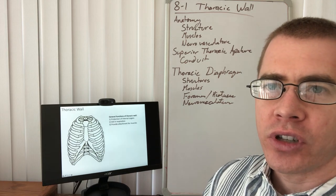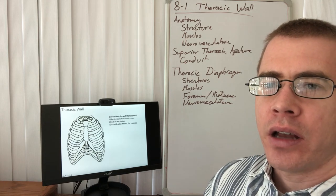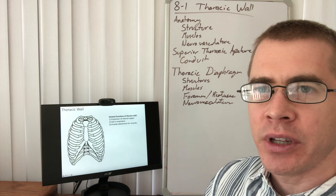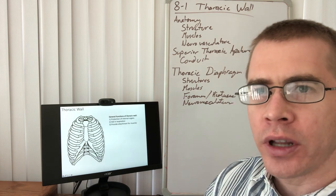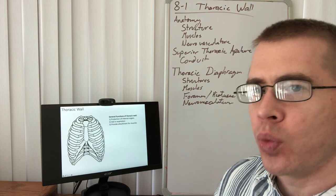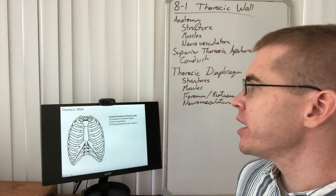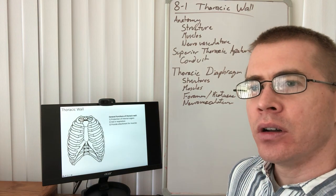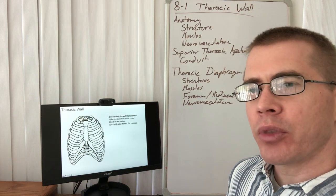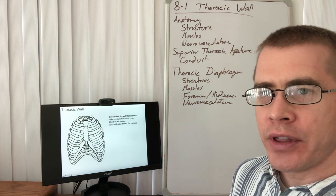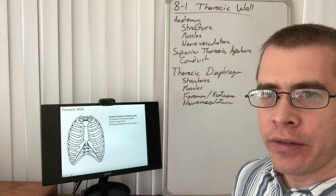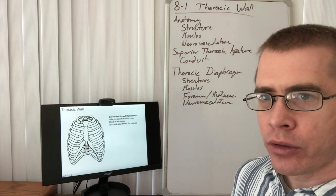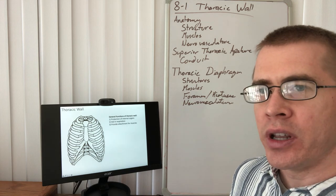Let's take a break from the neuroscience and go back to some strict anatomy. Let's talk about the thoracic wall, lecture 8-1. In this lecture, there's going to be a lot of discussion about what makes up the thoracic wall, the structure of it, the openings of it, what covers those openings, and what goes through those openings.